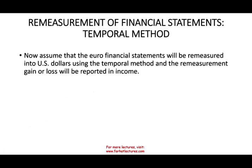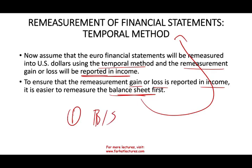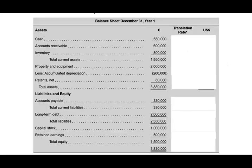Remeasurement of the financial statement using the temporal method: we assume the euro financial statements will be remeasured into U.S. dollars using the temporal method. The remeasurement gain or loss will be reported in net income — unlike the current rate method where the translation adjustment goes to the balance sheet. To start, we remeasure the balance sheet first. Monetary assets — cash and accounts receivable — are translated at the current exchange rate of $1.25.